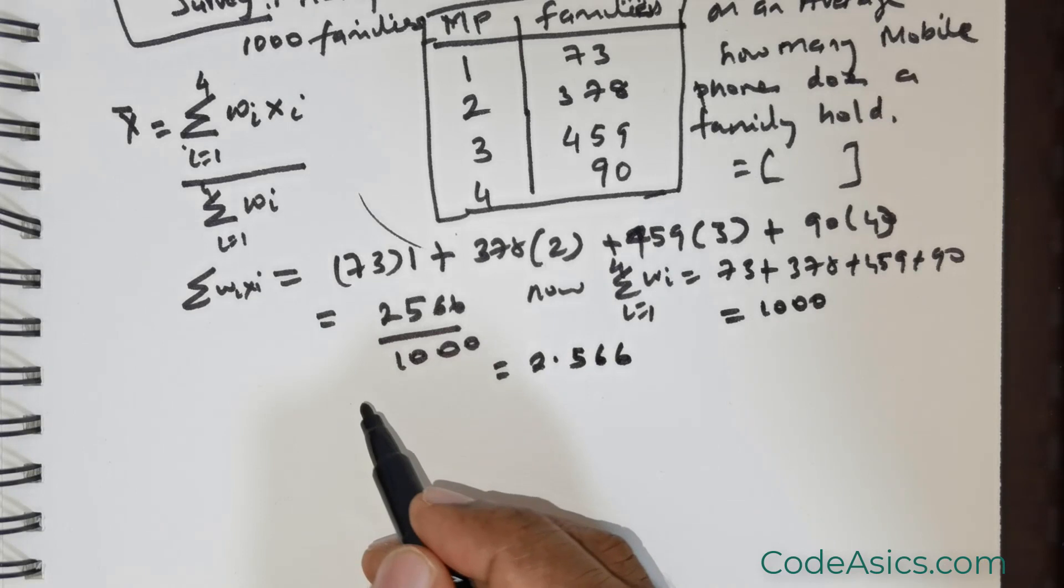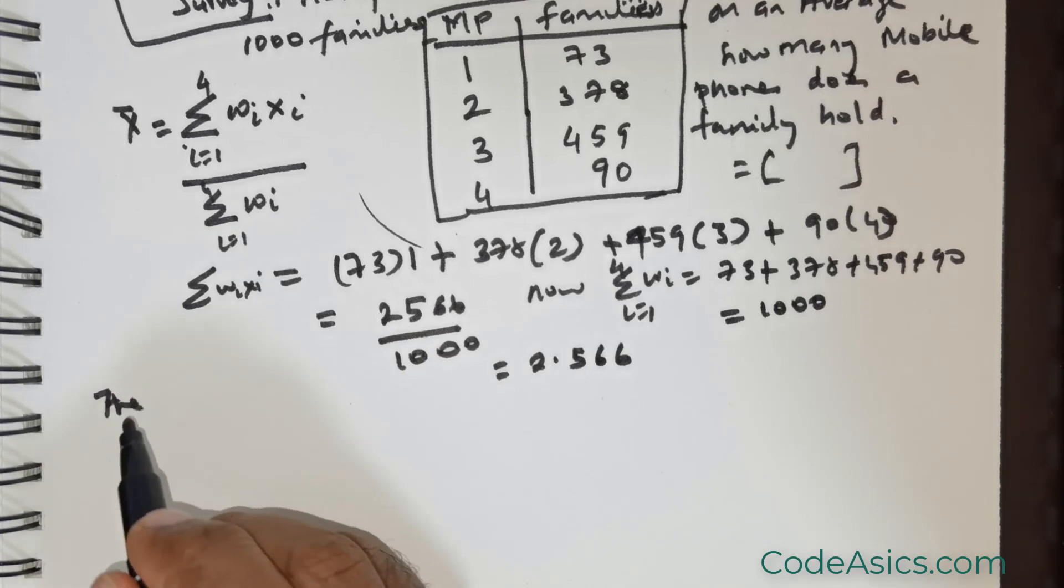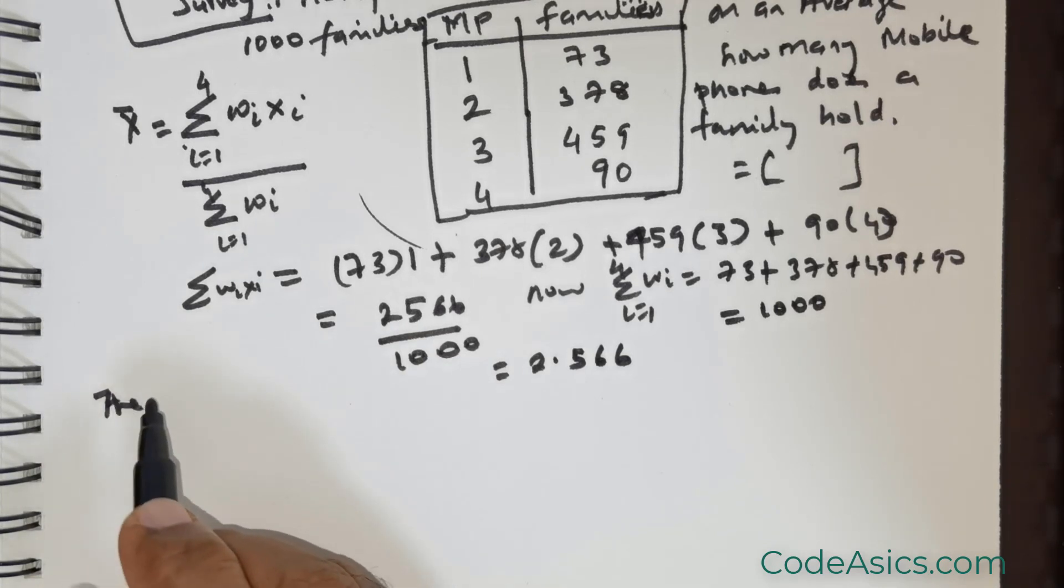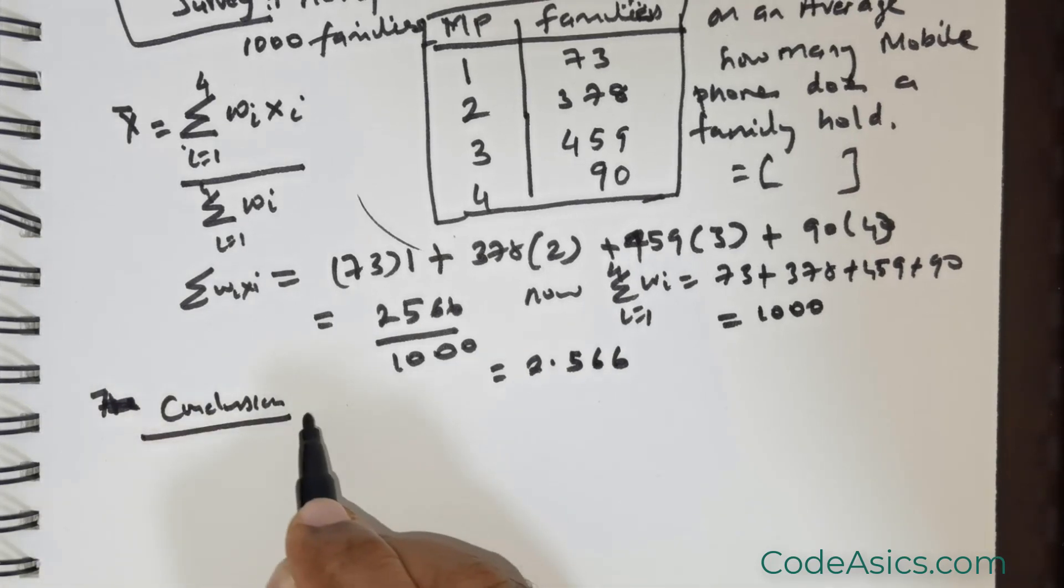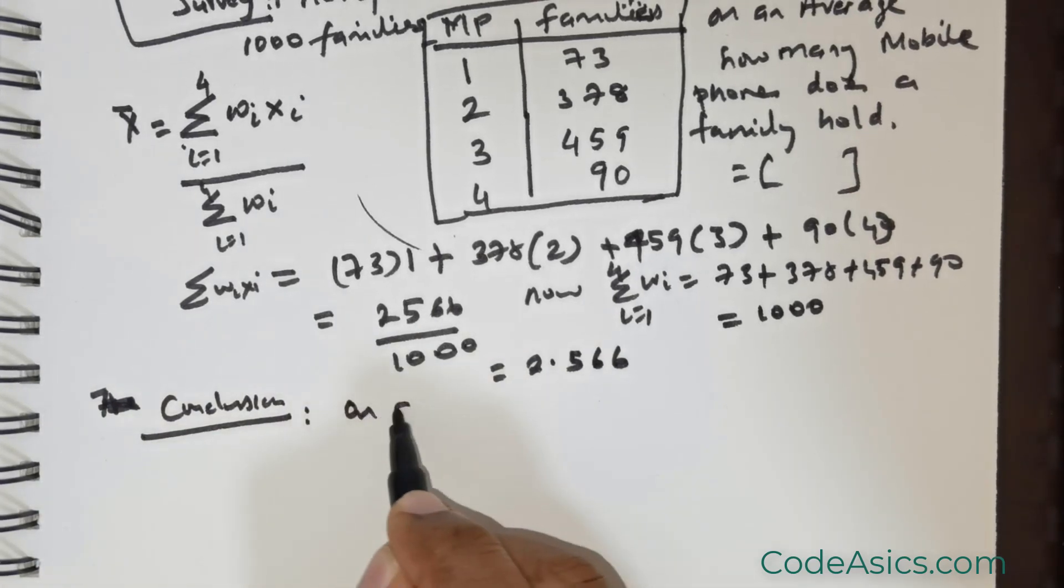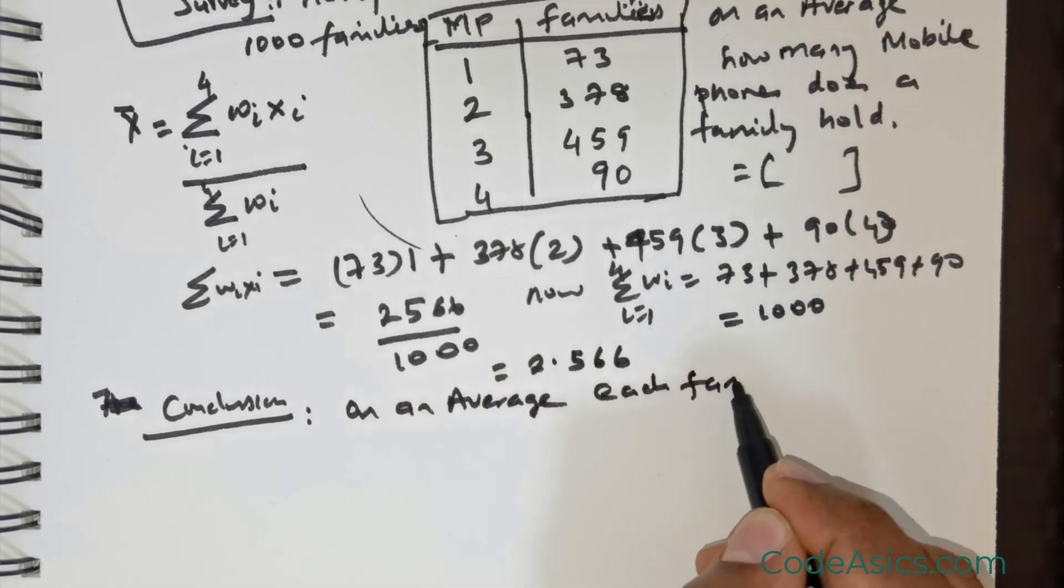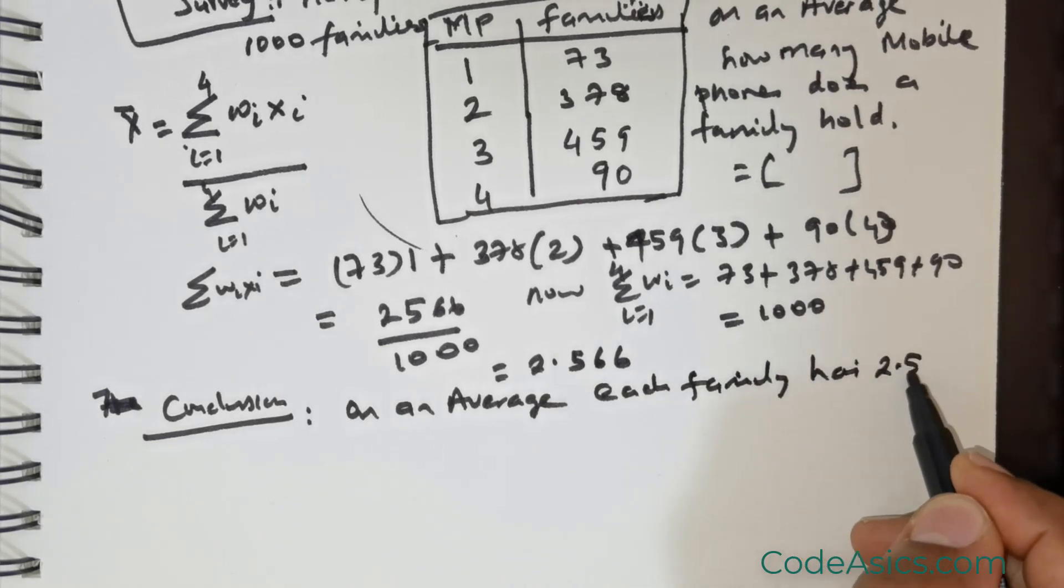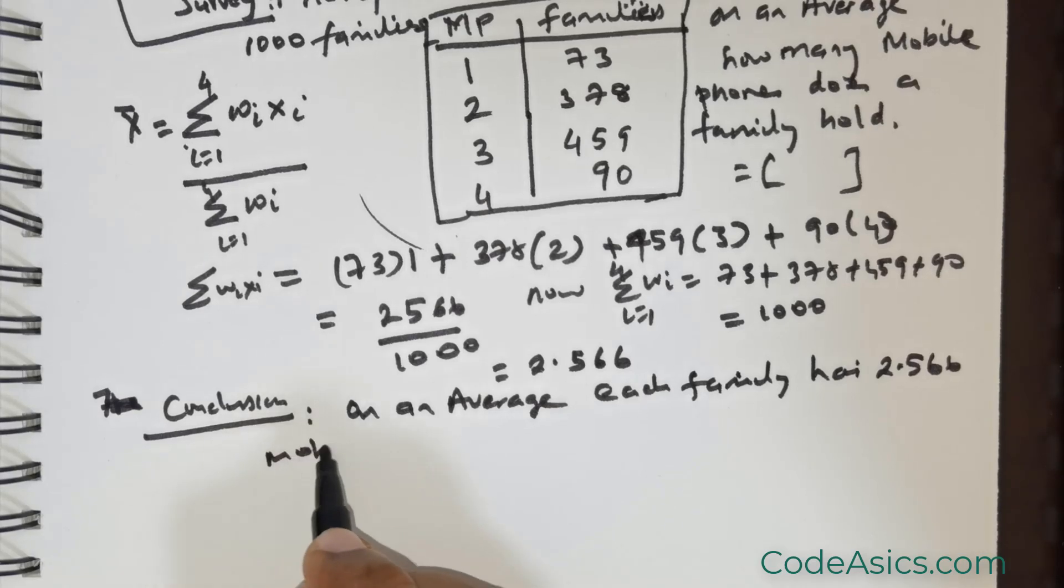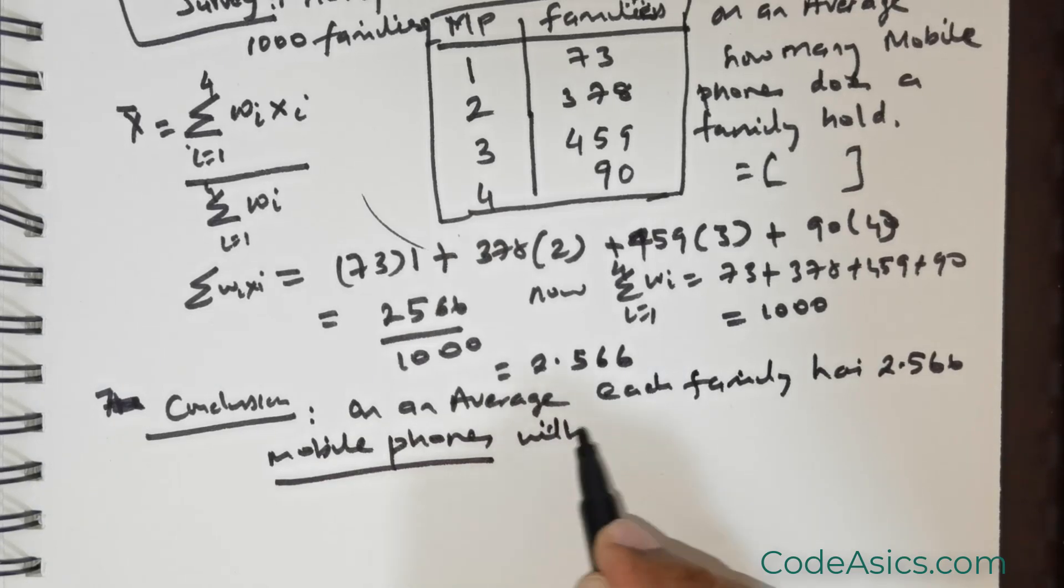So what is the conclusion? You have to state the conclusion. Let me give the conclusion like this: on average, each family has 2.566 mobile phones with them.